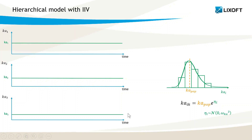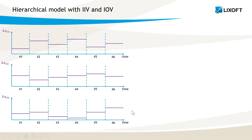However, this is not always the case, in particular if the observations have been recorded across different periods separated by long times. A simple approach to take into account the variation of individual parameters over time consists of splitting the study into several time periods or occasions, and assuming that data from the same individual over occasions is correlated, which is modeled with individual parameters that can vary from occasion to occasion but remain constant within occasions.